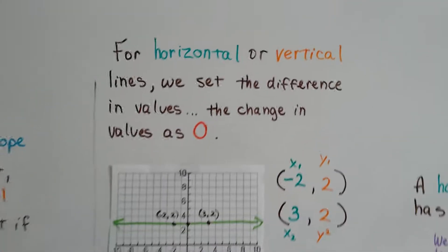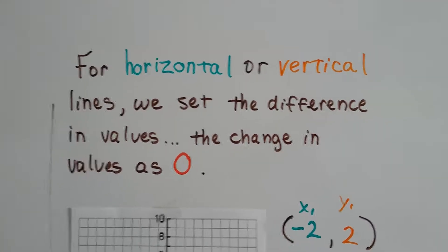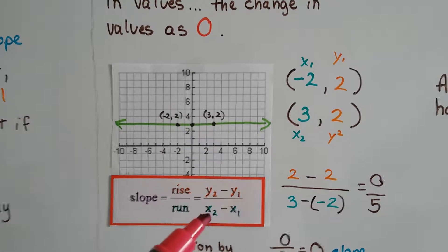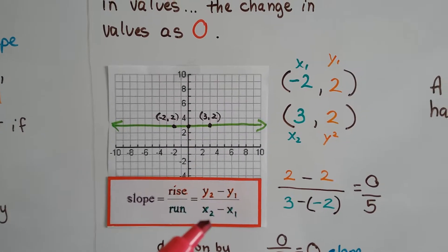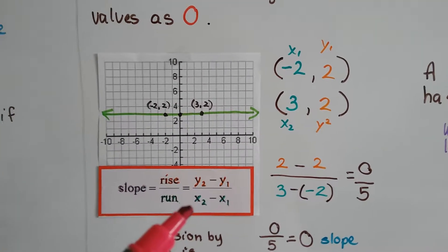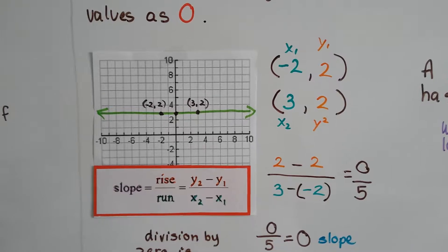For horizontal or vertical lines, we set the difference in values. The change in values is zero. When we follow this formula for the slope of a line, the rise over the run, it's the y2 values minus y1 as the numerator and the x2 minus x1 as the denominator.